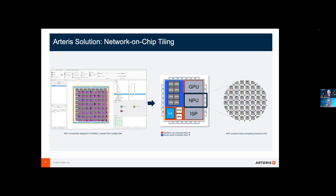What is tiling here — is this chiplets or is it something different? One specific solution is network on chip tiling, which is separate from physical chiplets. Network on chip tiling is more of a soft tiling approach. One fundamental NOC architecture used in concert with NOC tiling is that of using mesh interconnect, which is heavily featured in today's AI use cases.